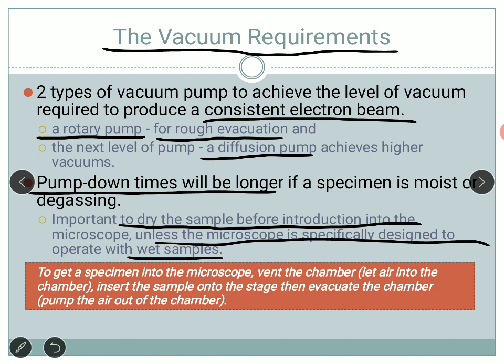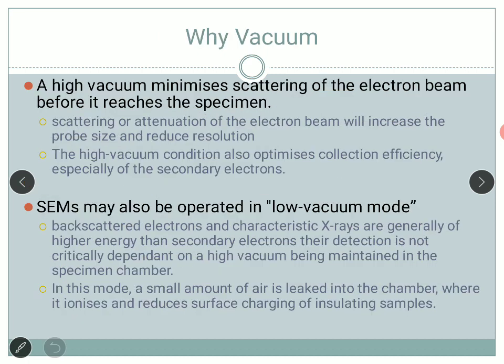The vacuum system is most of the time kept under vacuum. In order to get the specimen into the microscope we vent the chamber — we let air inside. After that we open the chamber, put the sample onto the stage, and then evacuate the chamber again before starting the experiment. The vacuum, at a high level, minimizes the scattering of the electron beam before it reaches the specimen. We want the electron to be focused and not scattered when it reaches the specimen.